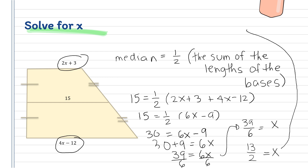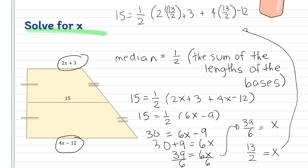Let's check. We substitute x = 13/2: 15 = one-half of (2 × 13/2 + 3 + 4 × 13/2 − 12). Simplifying, 2 × 13/2 = 13, so 13 + 3.